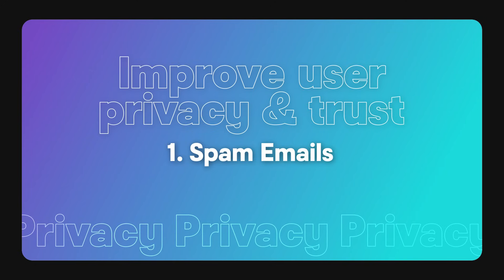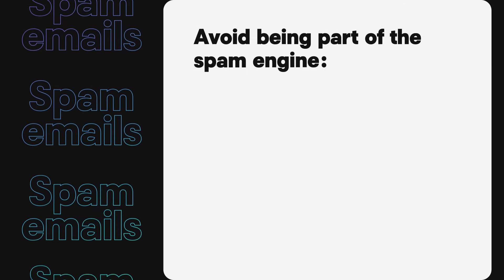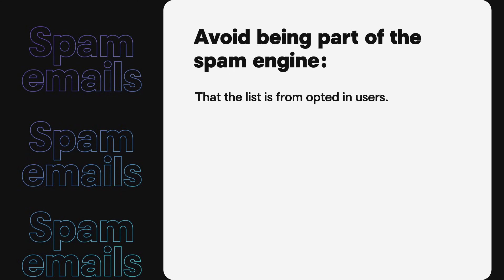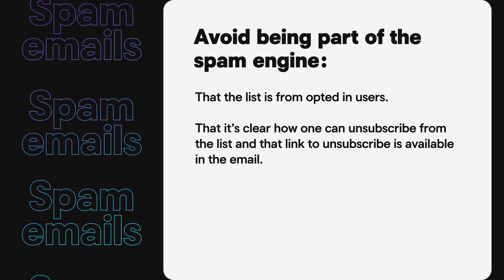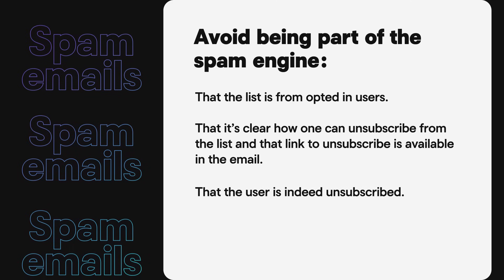One aspect of user privacy and trust is spam emails. It's easy to complain about an endless amount of spam emails, but it's sobering to think about the ways that we may contribute to this. You can do a few things to avoid being part of the spam engine. When you send emails on behalf of your business, make sure that the list is from opted-in users, that it's clear how one can unsubscribe from the list, and that the link to unsubscribe is available in the email. That the user is indeed unsubscribed. Sending unwanted emails is a blurry line of ethics.